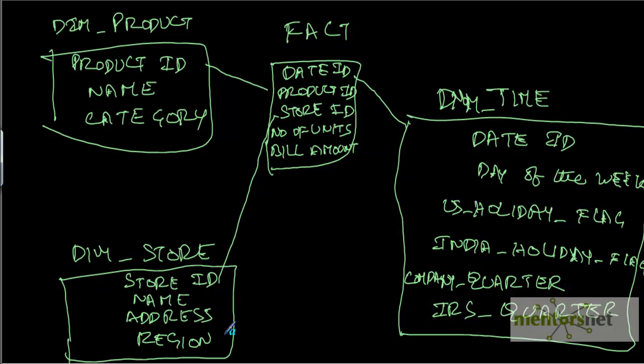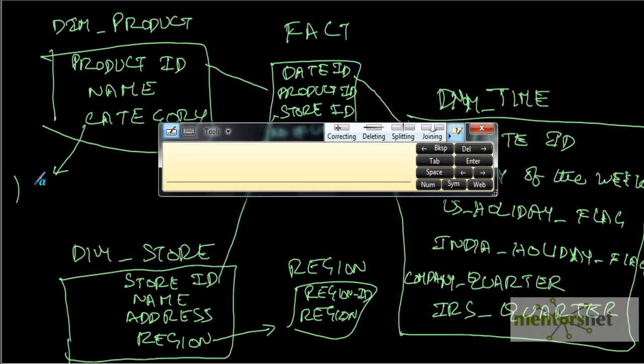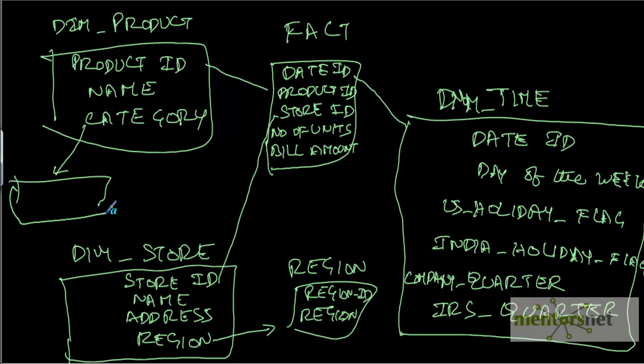We can move this part out into a separate dimension called region with a region ID and region name, and we can move the category out into a separate dimension table called category dimension with category ID and name.